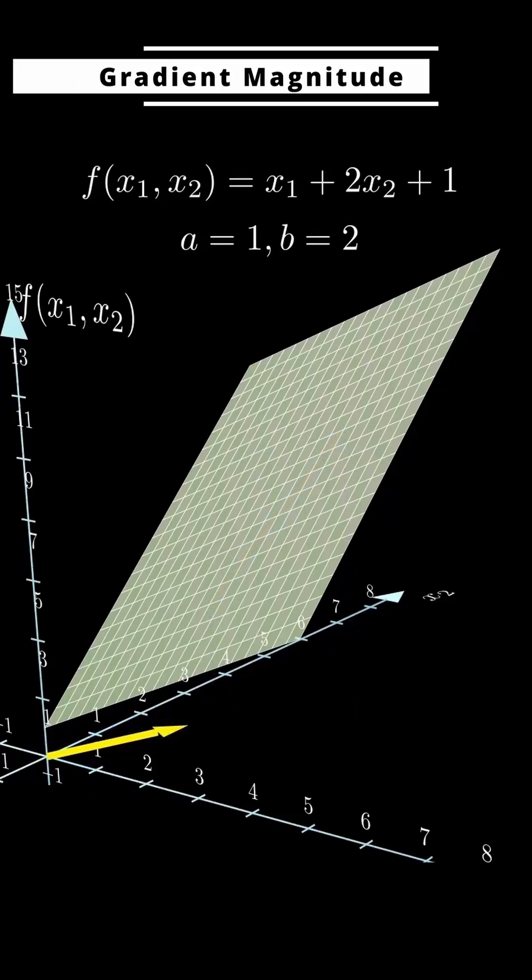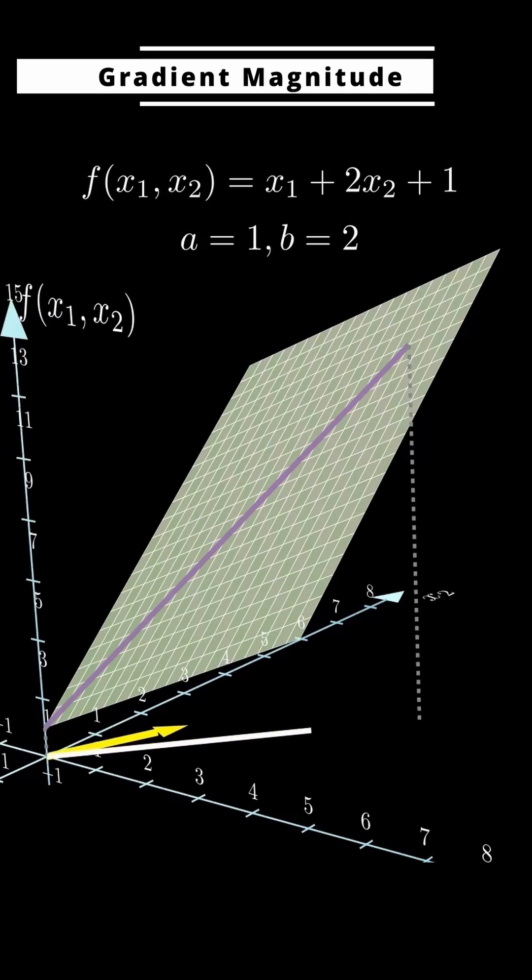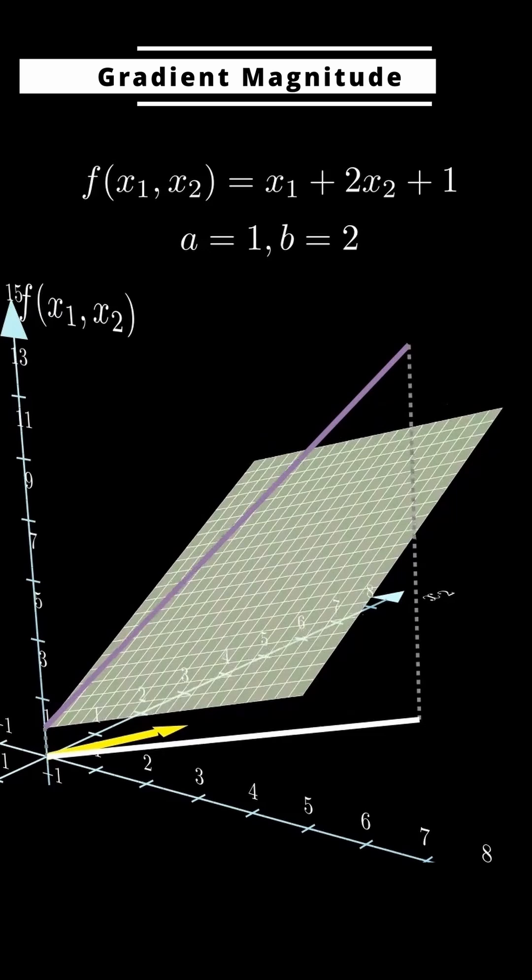Now, what about the size of the gradient? Does it just mean how much the whole surface is tilted compared to the x1, x2 plane? Not quite. It doesn't just mean steepness in general.